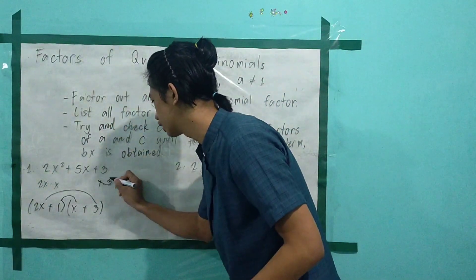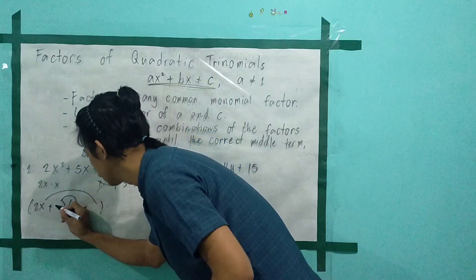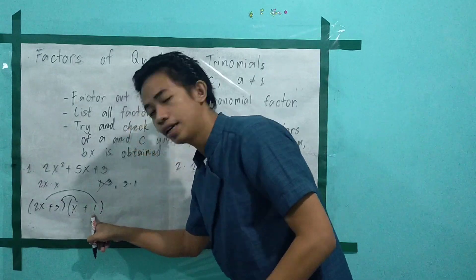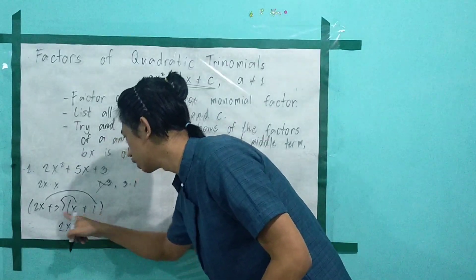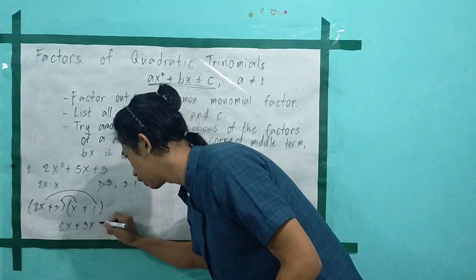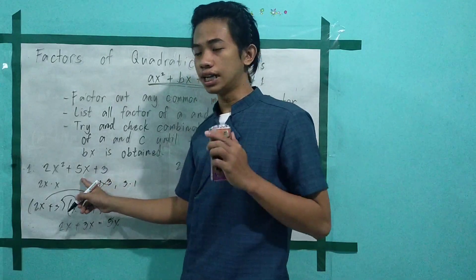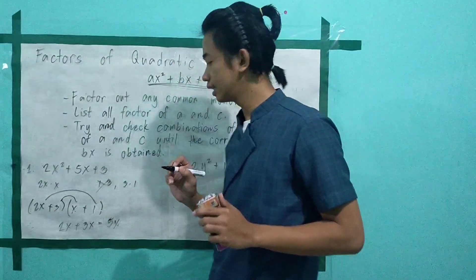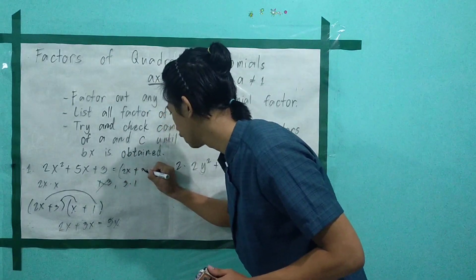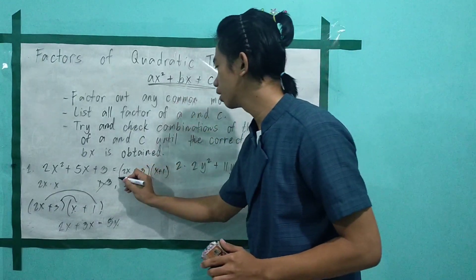Let's try the other combination: (2x + 3)(x + 1). So 2x multiplied by 1 gives 2x, and 3 multiplied by x gives 3x. Then 2x plus 3x equals 5x. Is that the same as our middle term? Yes. Therefore, the factors are (2x + 3)(x + 1).